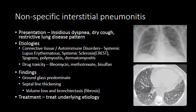Non-specific interstitial pneumonitis (NSIP) is one of the more common forms of pulmonary fibrosis. It starts with a chronic or insidious cough or hypoxia and creates a restrictive pattern of lung disease. Many etiologies—many autoimmune—can result in NSIP, but drug toxicity is also important. Radiographic findings include ground glass opacity and septal line thickening with both intralobular and interlobular septal thickening, decreased lung volume, and bronchiectasis. Treatment involves addressing the underlying etiology.